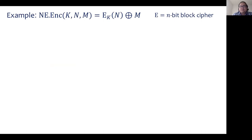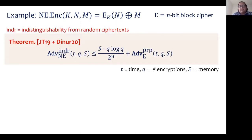To illustrate this, here is a toy example of a nonce-based encryption scheme based on an n-bit block cipher. It just encrypts the nonce using the block cipher and XORs the message. One can prove this theorem, which is a corollary of two previous works, one of which makes connections to communication complexity. It proves an upper bound on the advantage of distinguishing ciphertext from random, which is the standard notion for confidentiality for nonce-based encryption. In particular, the advantage of an adversary can be upper bounded in terms of its memory and number of encryptions, and the advantage of breaking the underlying block cipher as a pseudorandom permutation.